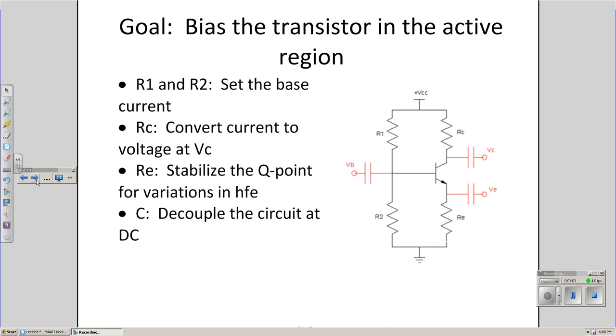The collector resistor, RC, converts current to voltage. Transistors are current amplifiers. If you want to get a voltage out to drive the speaker, say, I need something that converts current to voltage. That's the resistor.